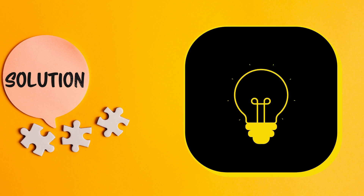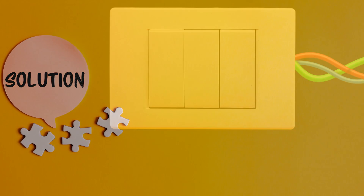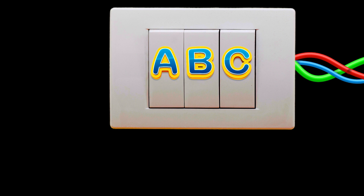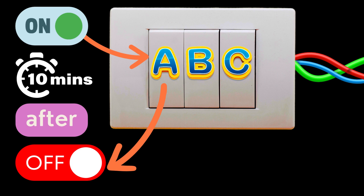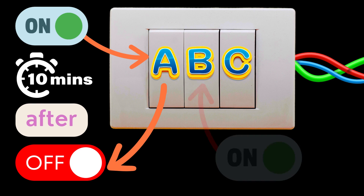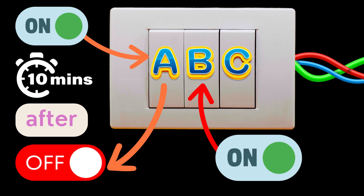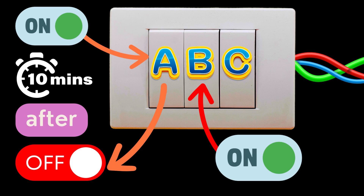Okay, let's look at the solution. Label the switches A, B, and C. Step one: turn on switch A for 10 minutes, then after 10 minutes turn it off. Step two: turn on switch B, and then open the door to identify the bulbs.